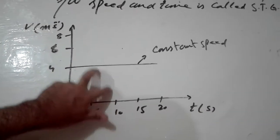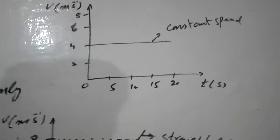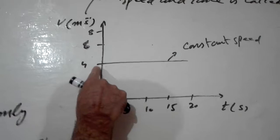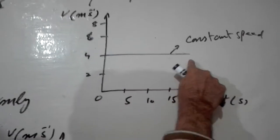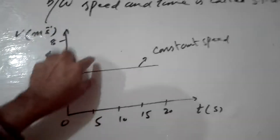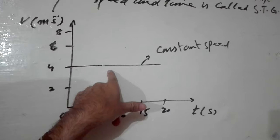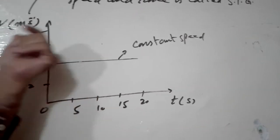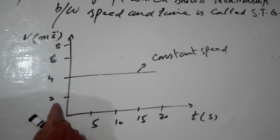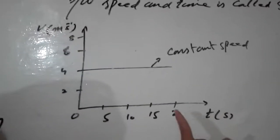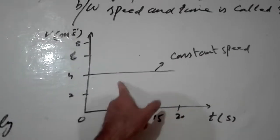I have drawn the graph for a body moving with constant speed. The body's speed has become constant at 4 m/s, so the line is a straight line parallel to the time axis. This shows that the body is moving with constant speed — the speed is not changing. If you are asked to draw the speed-time graph for constant speed, draw a straight horizontal line parallel to the time axis at whichever speed value you choose.